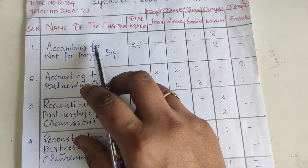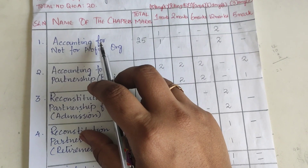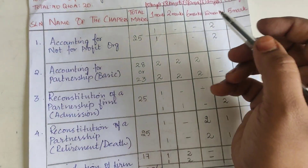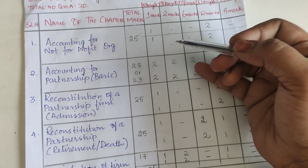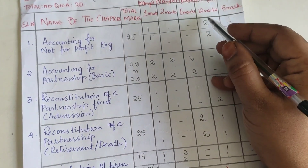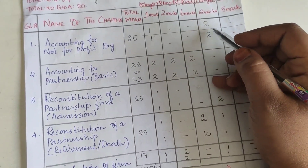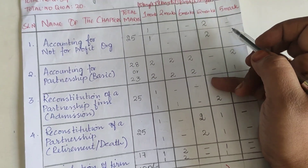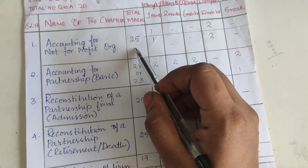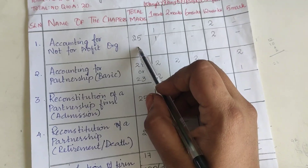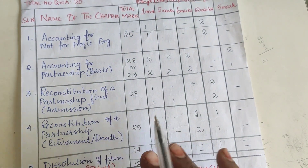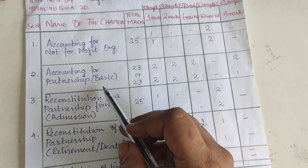The first chapter is Accounting for Non-Profit Organizations. One mark will be asked, no 2-mark, no 6-mark, but 12 marks will be asked twice, and no practical-oriented questions will be asked. Overall, you can get 25 marks from the first chapter.